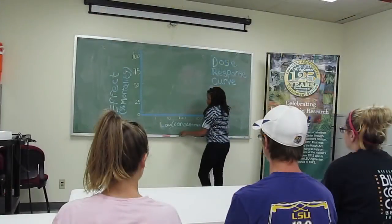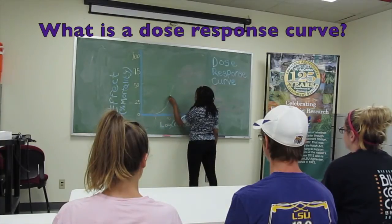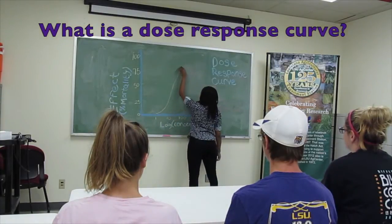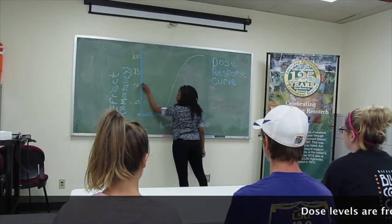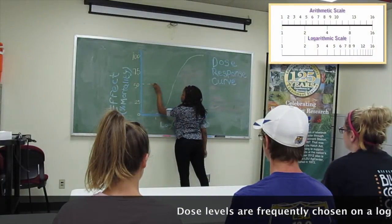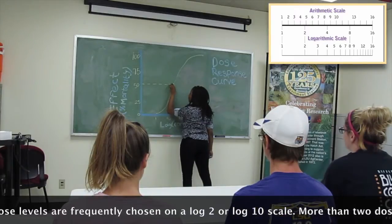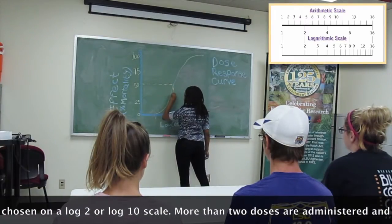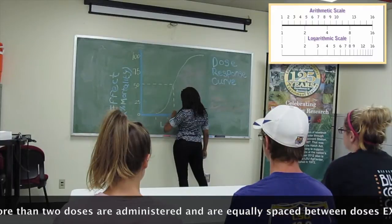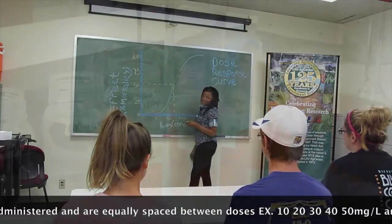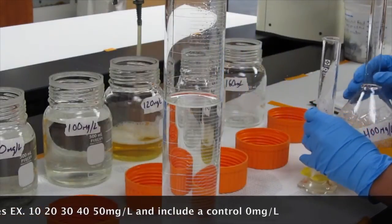The dose-response curve will indicate that point when an organism experiences adverse effects of exposure from a toxicant. Responses can include endpoints at varying levels of organization within an organism or within a population of animals such as mortality. The log of concentration or dose part of this curve relates to the amount of potential toxicant that can be given to a test organism — in this case, it is mixed with water.